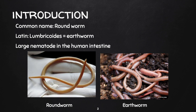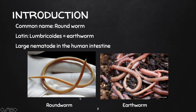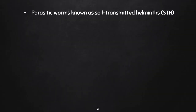As you can see on the screen, the right image shows the earthworm and the left side shows the roundworm. Most of us have already seen an earthworm, which is easy to find in our surroundings. Ascaris is a parasitic worm known as a soil-transmitted helminth, or STH, together with the whipworm and the hookworm. Together, they account for a major burden of parasitic disease worldwide.